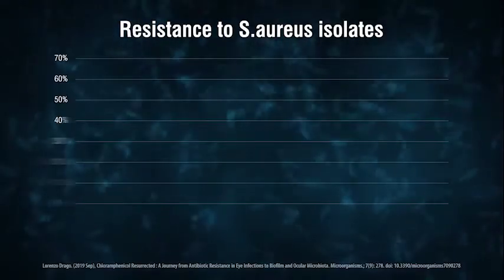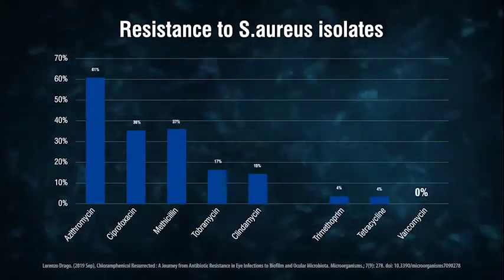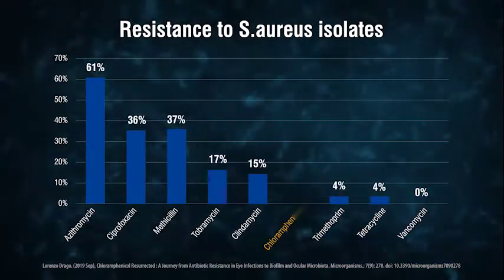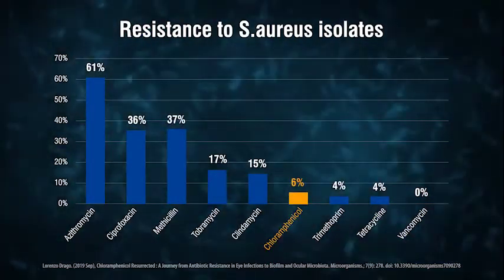Monitoring ocular microorganisms showed lower resistance to chloramphenicol. Staphylococcus aureus isolates demonstrated this reduced resistance profile.